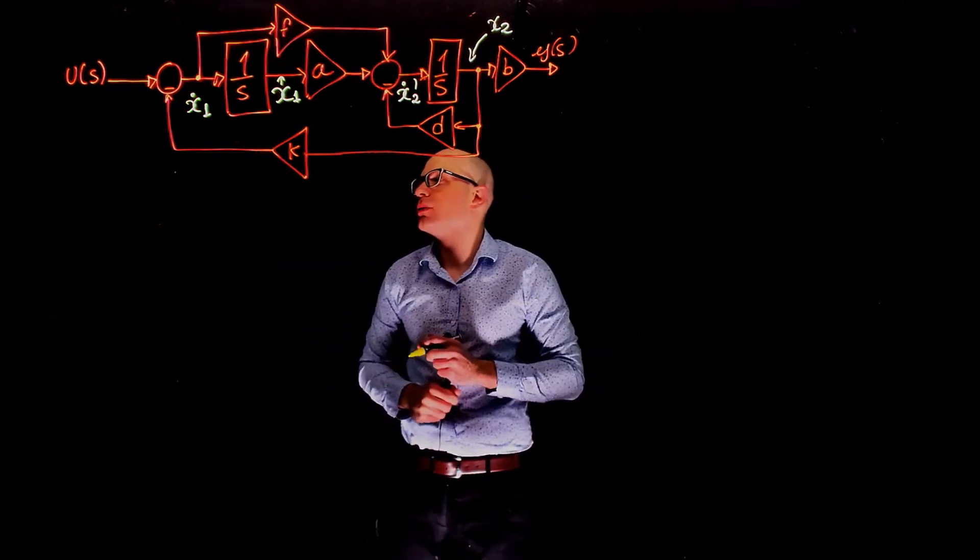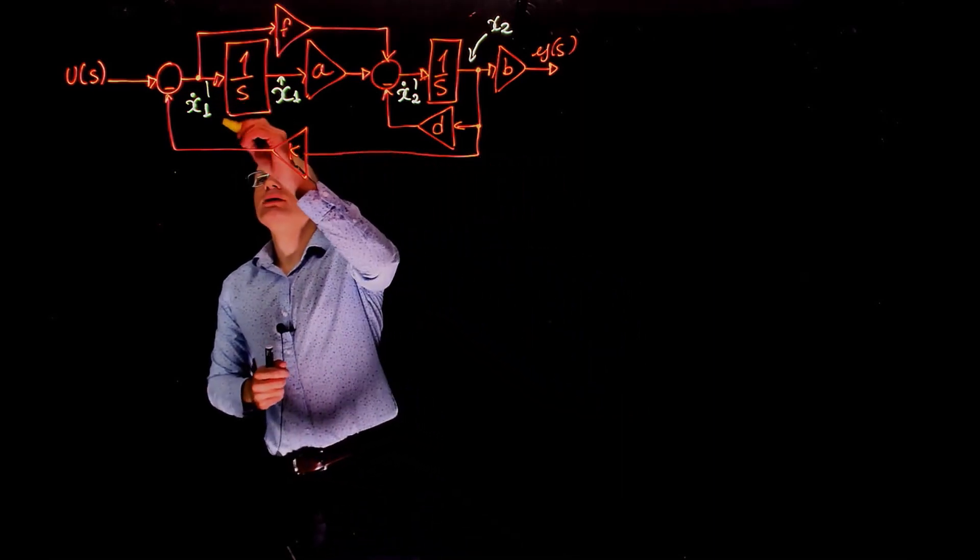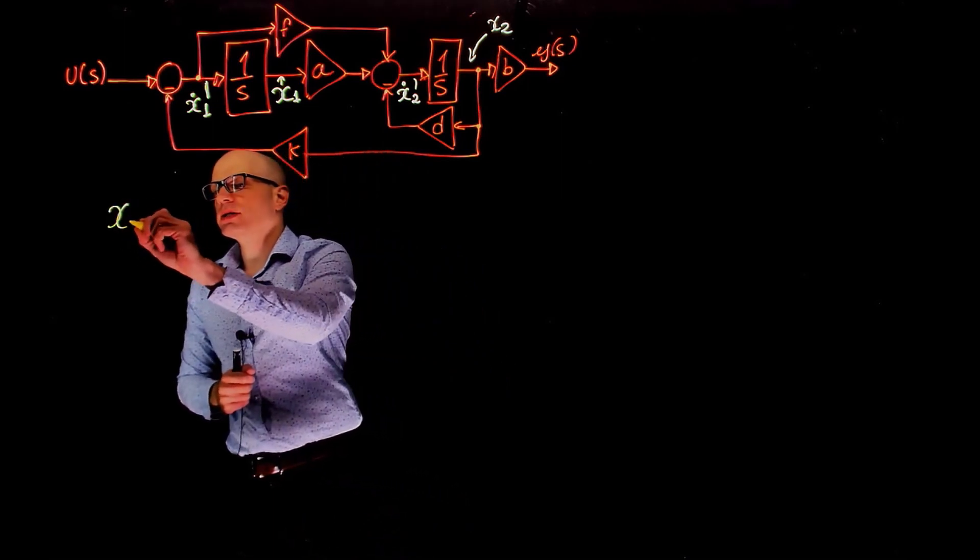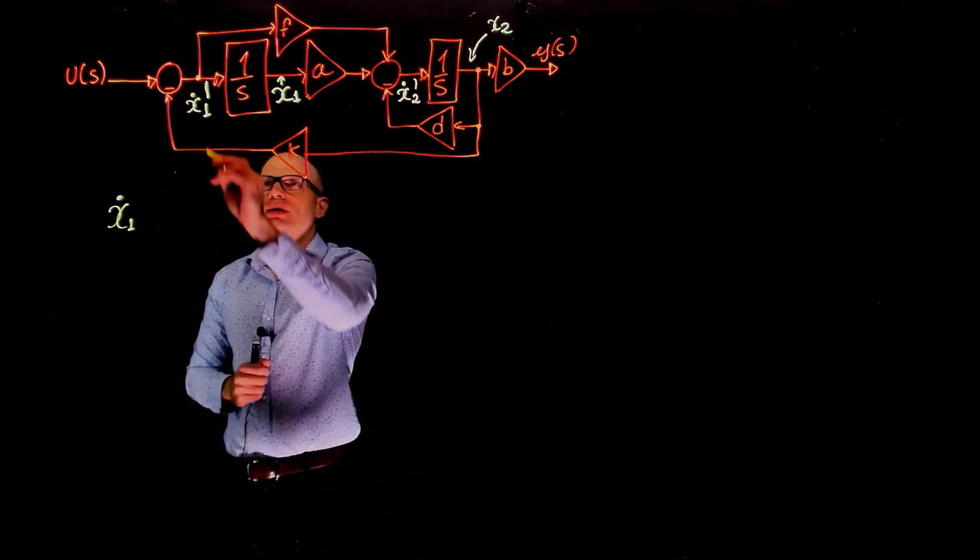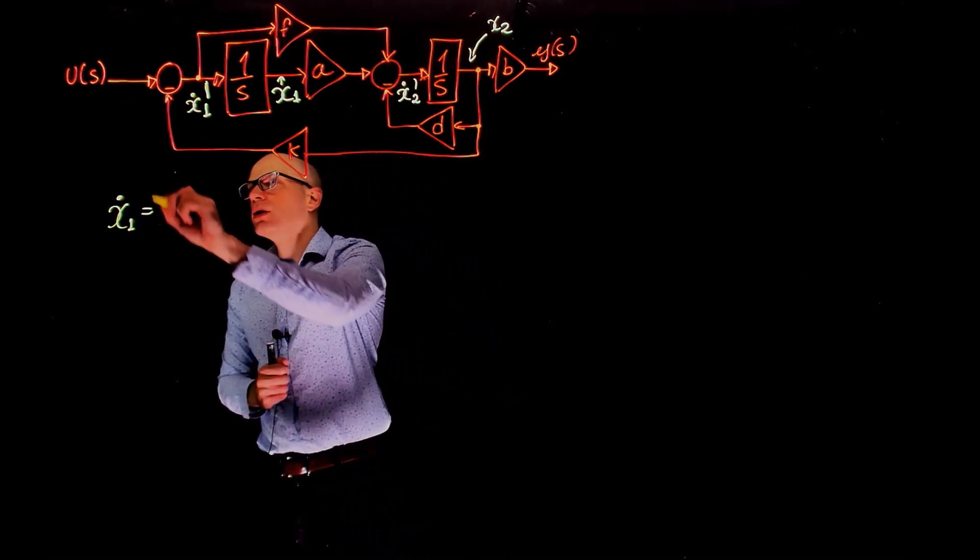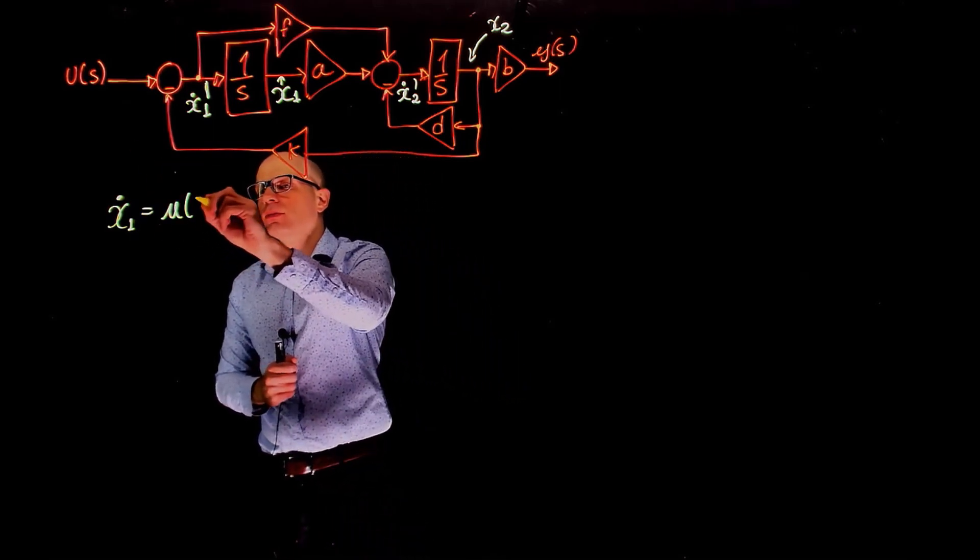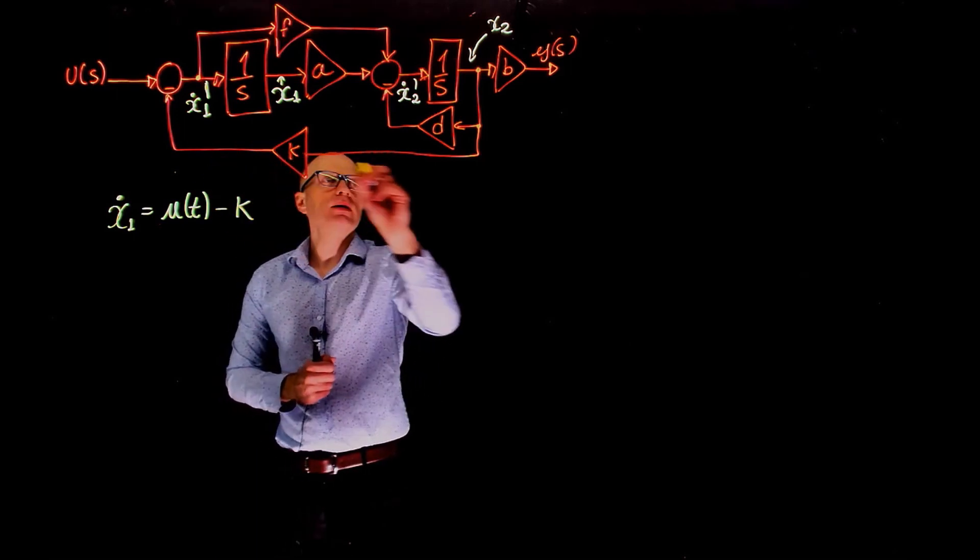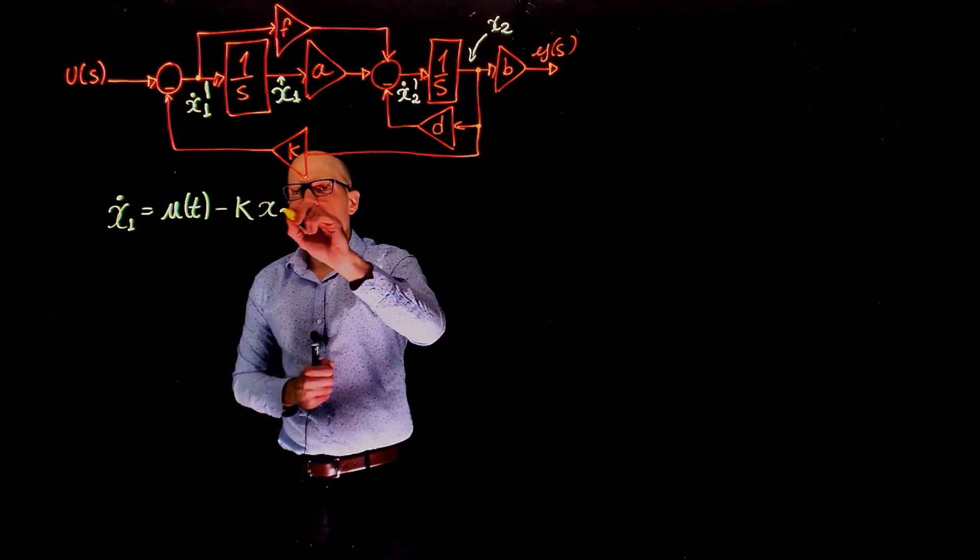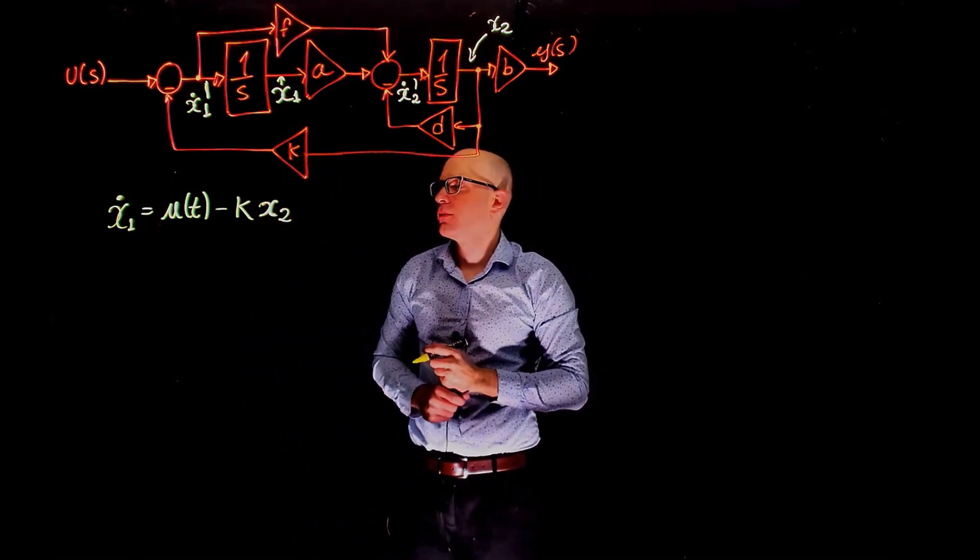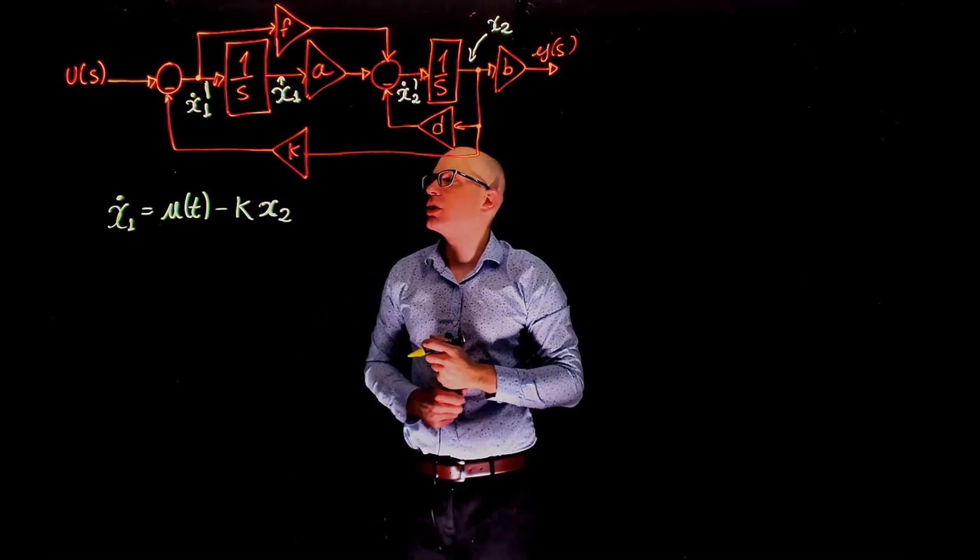So let's see how we can do that. Let's just start with x1. x1 dot is here. So if x1 dot is there, what can we write? We can say that at this point in the system is u of t minus k times x2. And this is the first expression we have. This is sufficient for x1 dot.